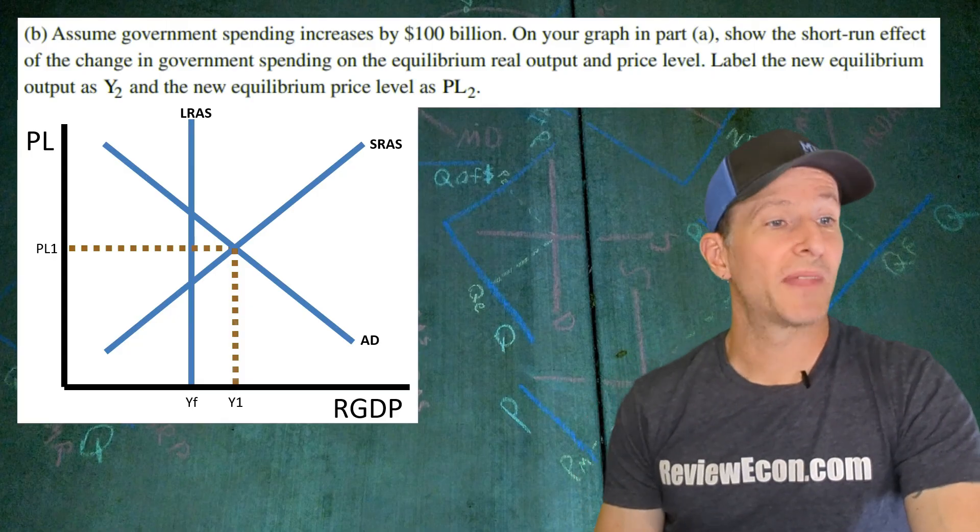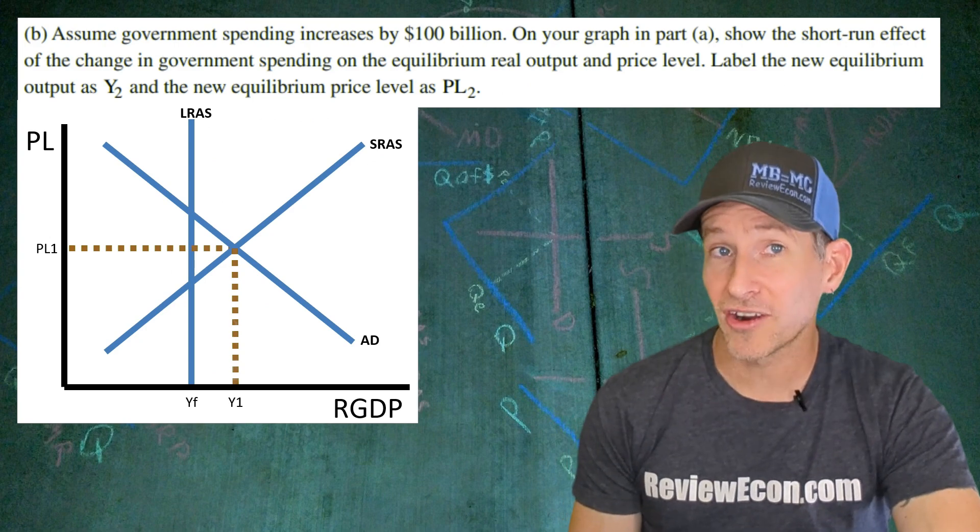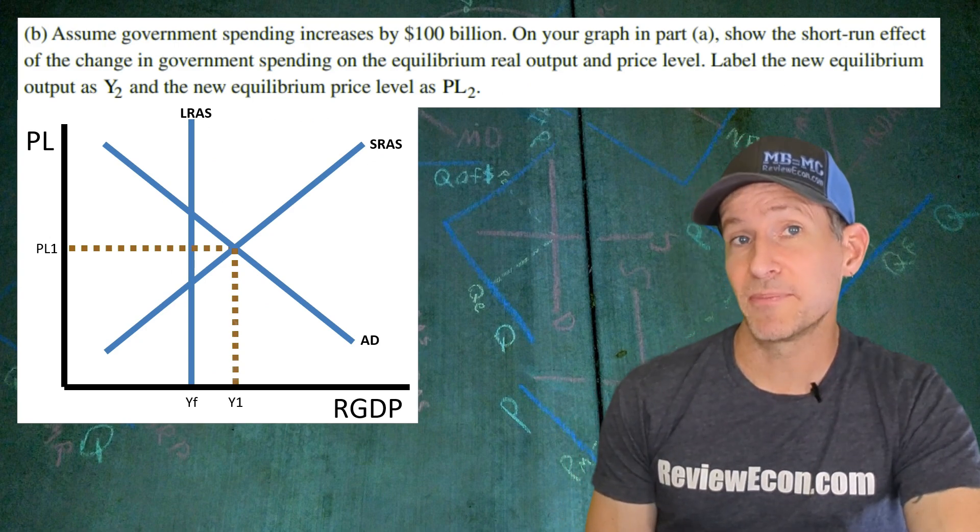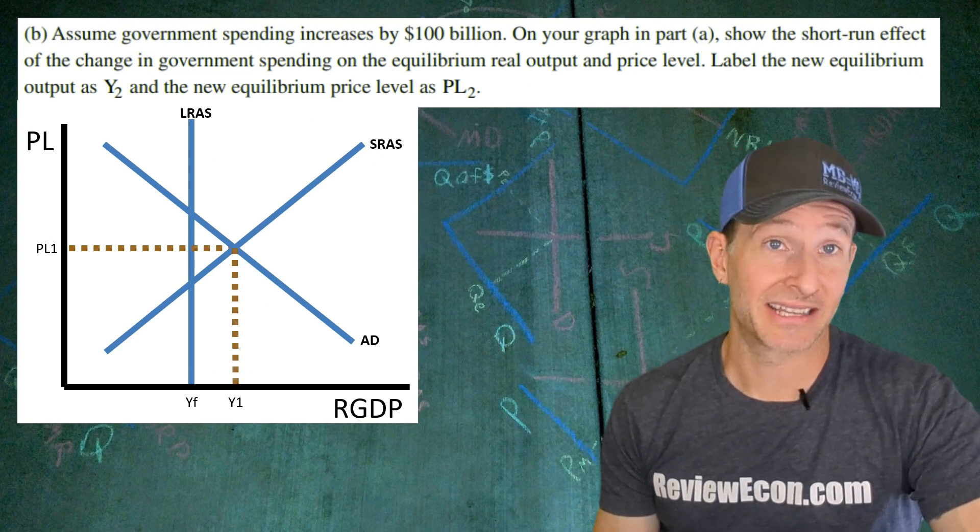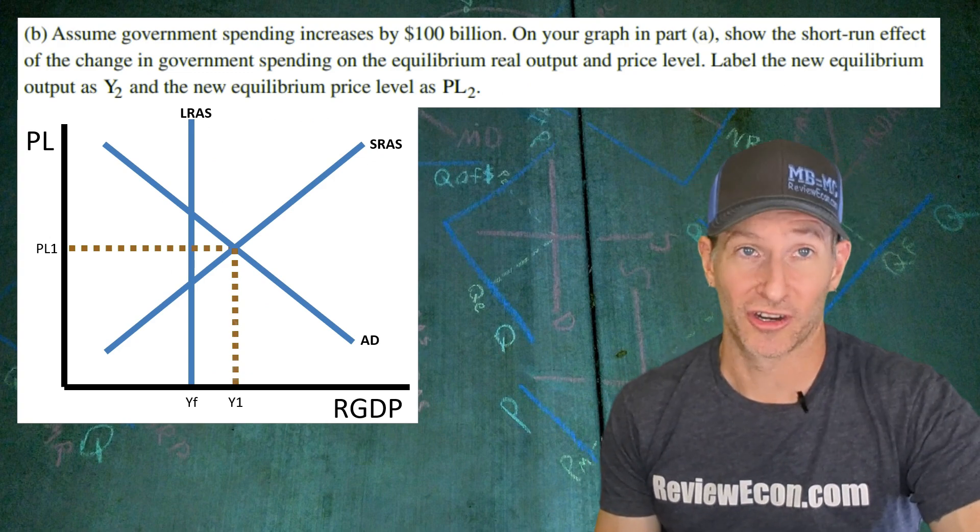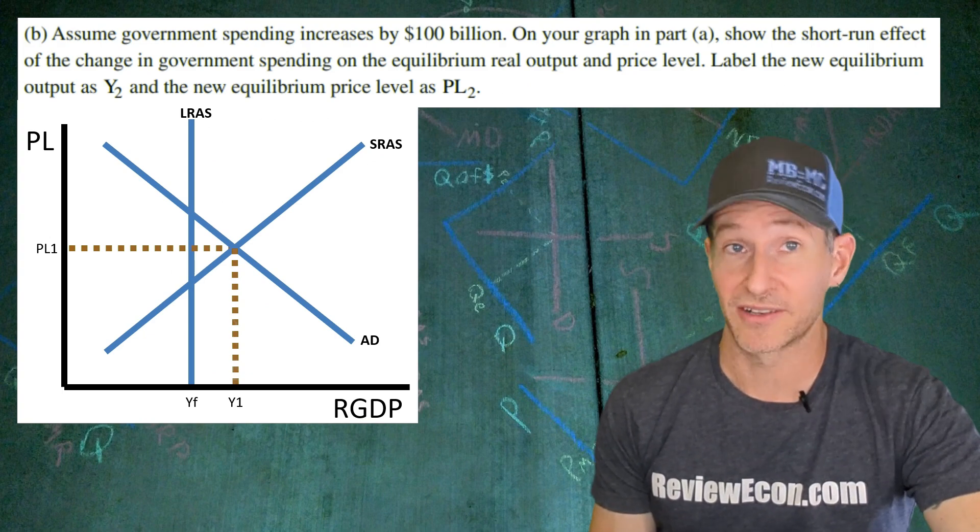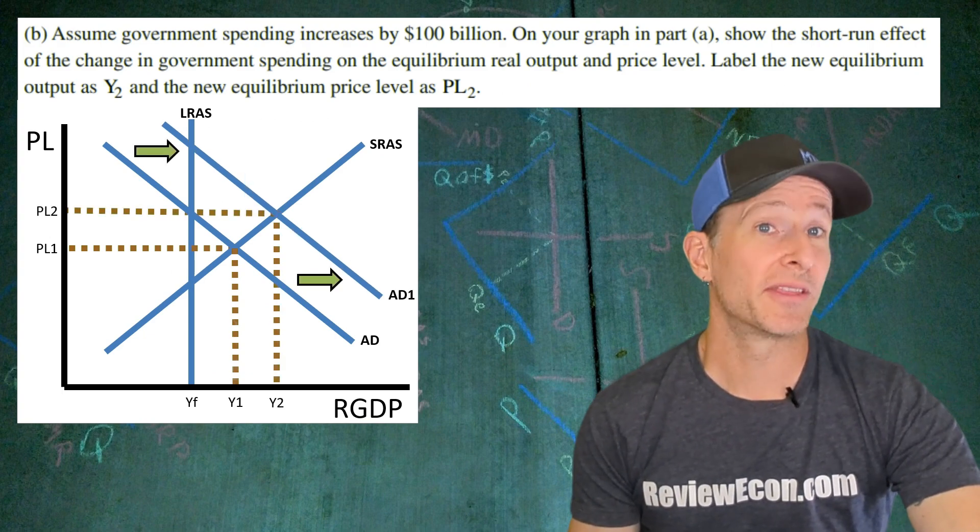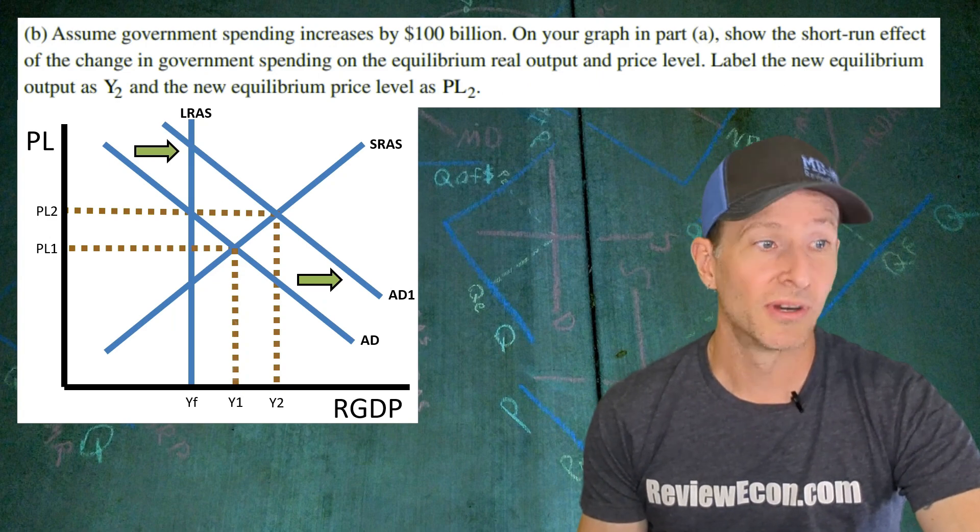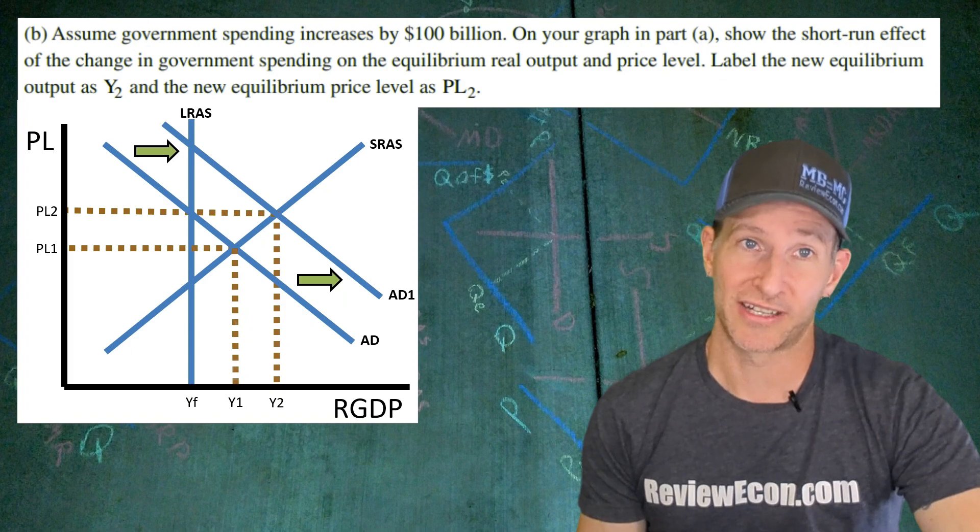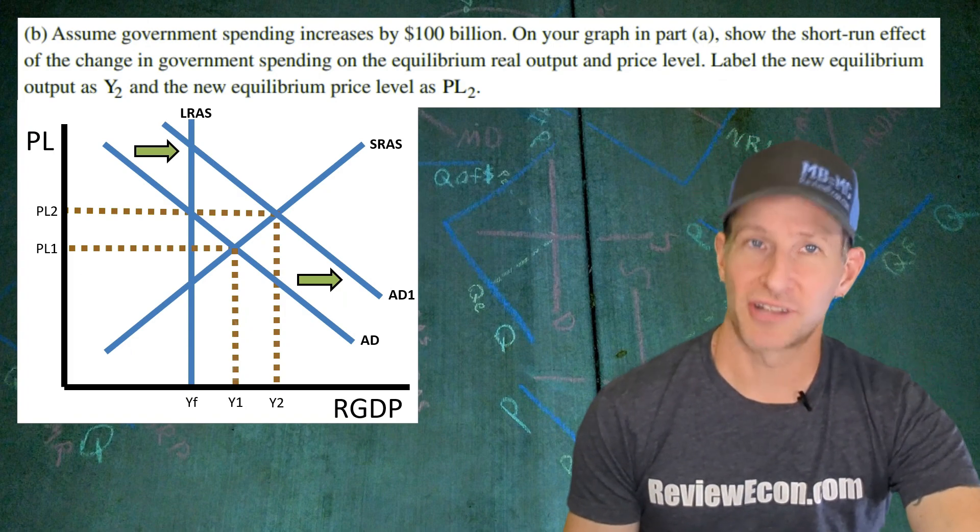For part B we're going to assume that the government increases spending by a hundred billion dollars. On our graph that we already drew in part A we're going to show the impact on the price level and real GDP output. Government spending is a shifter of the aggregate demand curve. Since there's an increase in that government spending it's going to shift that aggregate demand curve to the right. Draw in that new AD curve with some arrows and label the new price level PL2 and the new real GDP output as Y2.